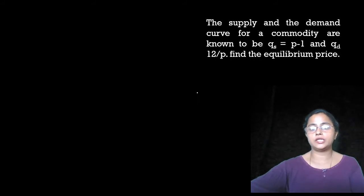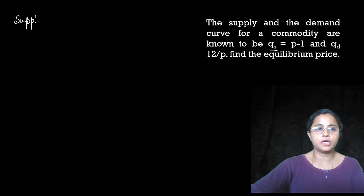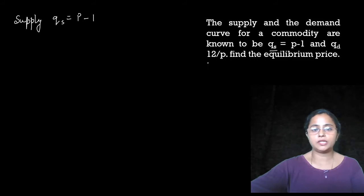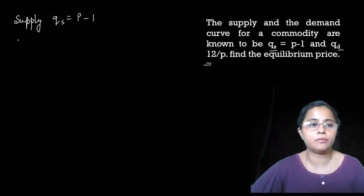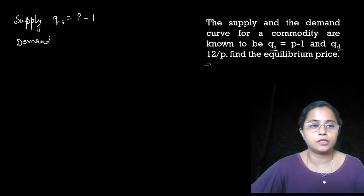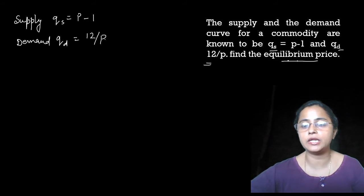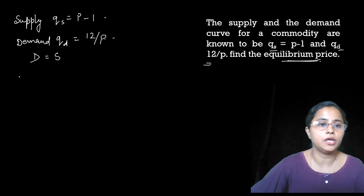We have two equations. Qs is the supply function — S stands for supply. The supply function is Qs equals P minus 1. Now for demand: Qd equals 12 upon P. That is our demand function. To find the equilibrium price, we set demand equal to supply — D equals S.